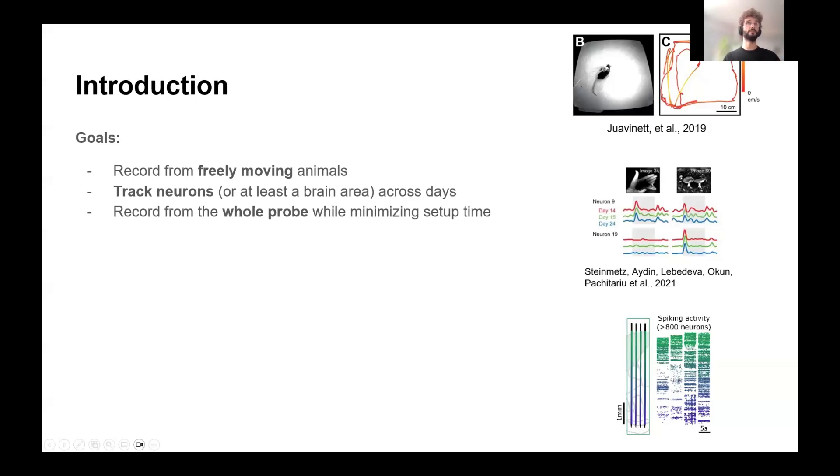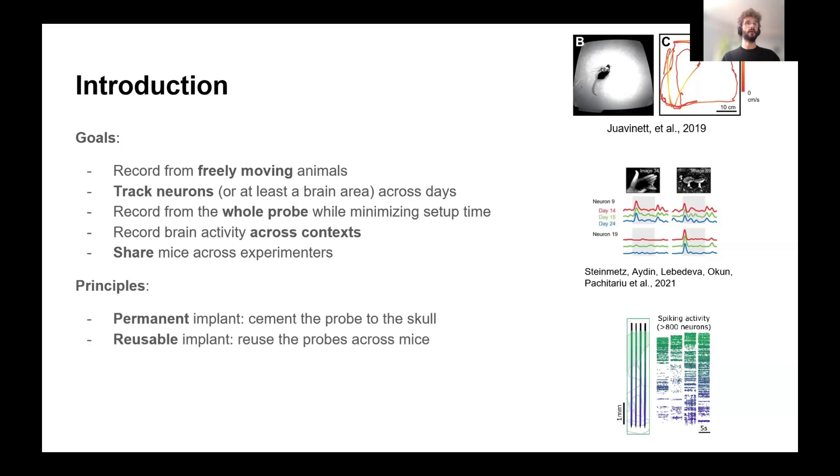There are other reasons why you may want to also chronically implant these probes, to record brain activity across context, like when the mouse is freely moving and also in your rig that's very well controlled. Also, if you want to share mice across experimenters, which we do a lot in the lab. There are two main ways to perform these chronic implants. You have permanent implants where the probe is actually cemented to the skull and you can't recover it. These are very stable, but you lose the probe. And reusable implants or recoverable implants, where you use a little device to try to recover the probe at the end. And I'm mainly going to talk about this.